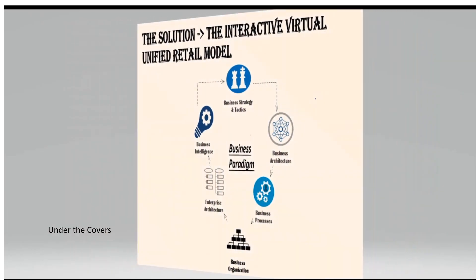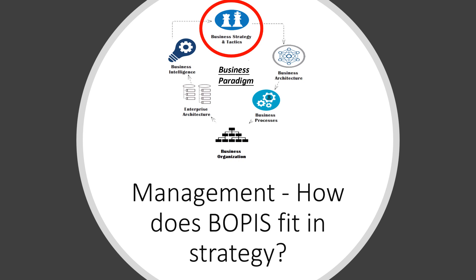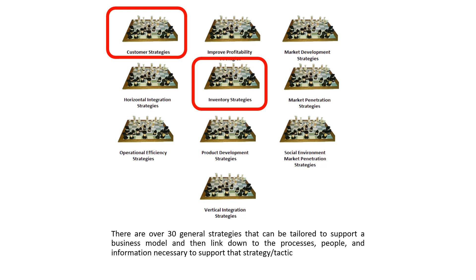Now we will look under the covers of the IVROM model. Every business starts with a business strategy, which is in the top area of the model. One of the questions you want to ask management is: how does BOPUS fit into our strategy? In IVROM, there are over 30 general strategies that can be tailored to support a business model and link down to the business processes, people, and data necessary to support that strategy. BOPUS covers several of these strategic areas — in this example, it relates to the customer area and to our inventory management strategy.